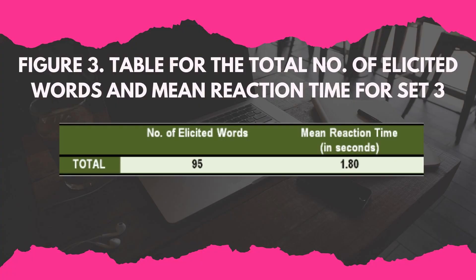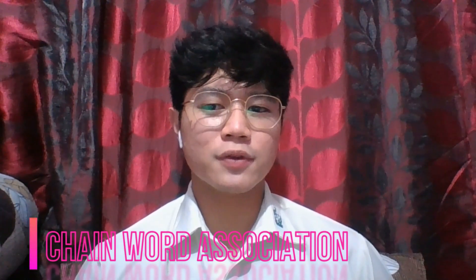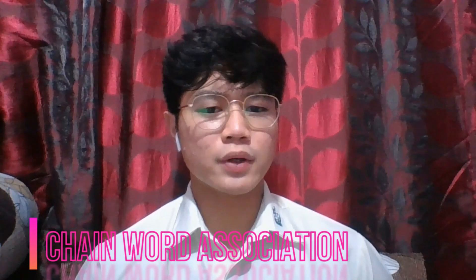Moving on to the third set, the participant was asked to say the word that comes to mind after hearing each stimulus word. The participant was able to elicit 95 words while having a mean reaction time of 1.80 seconds. This is a chain word association where the participant thinks of a related word for each elicited word.